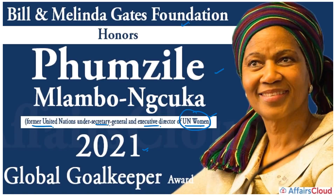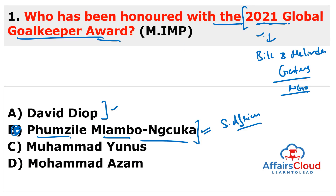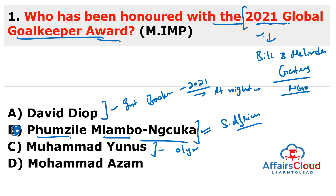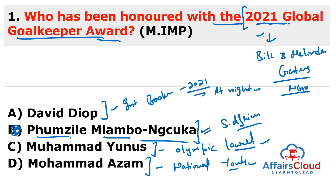These awards were instituted to recognize efforts toward achieving the United Nations Sustainable Development Goals. Remember, Bill and Melinda Gates Foundation is headquartered in the United States of America. You can also remember other recent awards: David Diab won the International Booker Prize 2021 for his novel 'At Night All Blood Is Black'; Muhammad Yunus won the Olympic Laurel at the Tokyo Olympics; and Muhammad Ajam won the National Youth Award, given by the Ministry of Youth Affairs and Sports, currently headed by Anurag Singh Thakur.